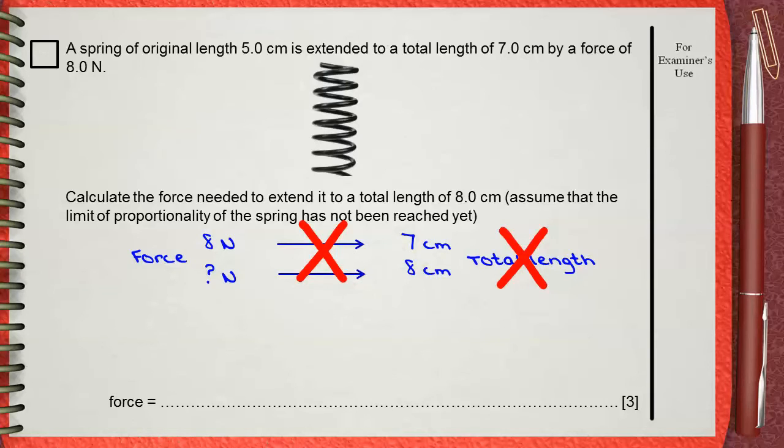So remember that the original length of the spring is 5 centimeters. This makes our cross multiplication a little different. We will say that 8 Newtons will cause an extension of 2 centimeters. From 5 to 7, this means an extension of 2 centimeters.